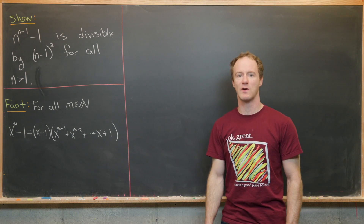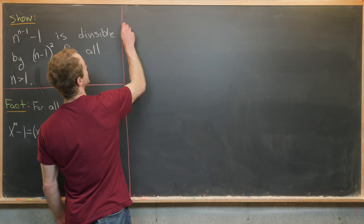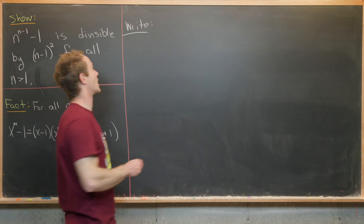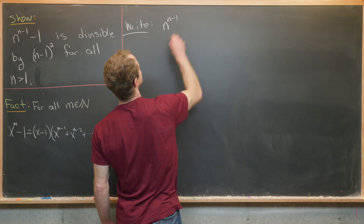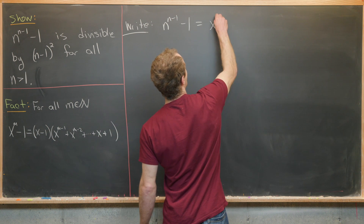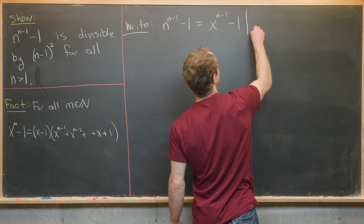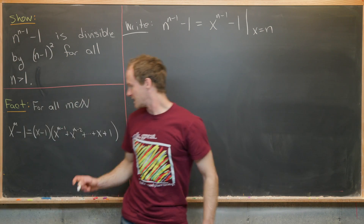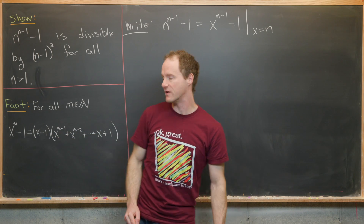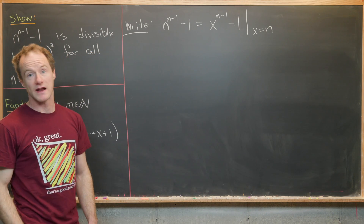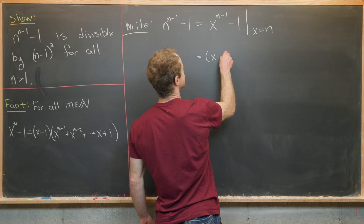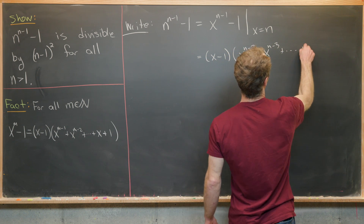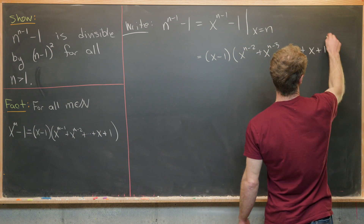Now let's move into this problem. I want to envision this as a polynomial factorization problem. So I'm going to take n to the n minus 1 minus 1 and think of it as x to the n minus 1 minus 1 evaluated at x equals n. Using our fact, we can factor one copy of x minus 1 out, giving x minus 1 times x to the n minus 2 plus x to the n minus 3, all the way down to x plus 1.